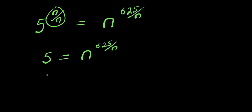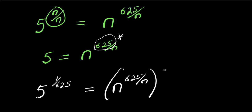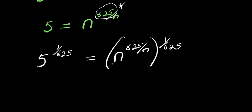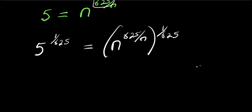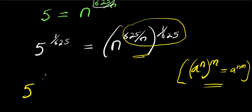The next thing we are going to do is eliminate the 6/5 here. I want to push it over to the other side. So I am going to multiply this exponent by 1 over 6/5. I have 5 to the power 1 over 6/5, equals n to the power 6/5 divided by n, raised to the power of 1 over 6/5. Remember, a to the power n raised to the power m equals a to the power n times m.